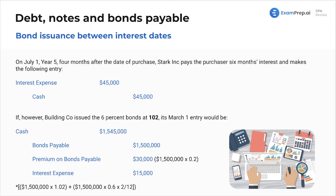This is a unique situation, but the test covers all kinds of different situations you need to get familiar with. On July 1st, Year 5 — four months after the date of purchase — Stark Inc. pays the purchaser six months of interest. This is a normal entry: interest expense is recorded on the income statement and cash is reduced because we're paying it out.